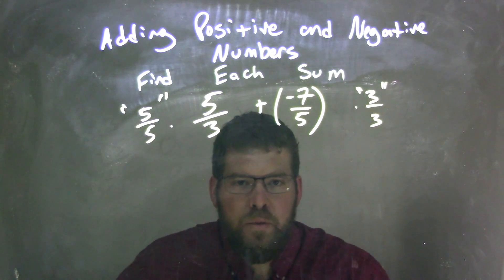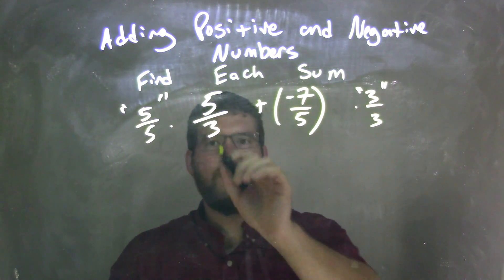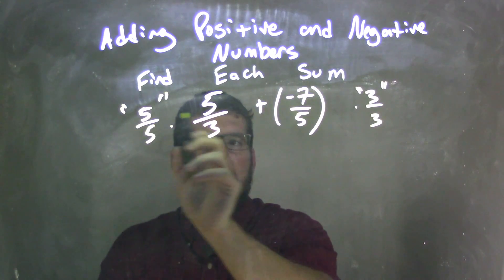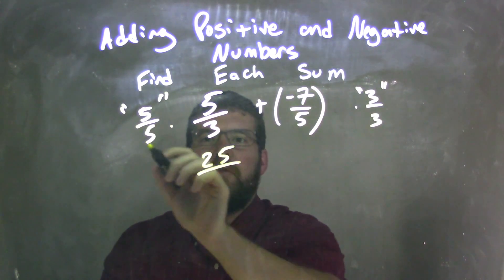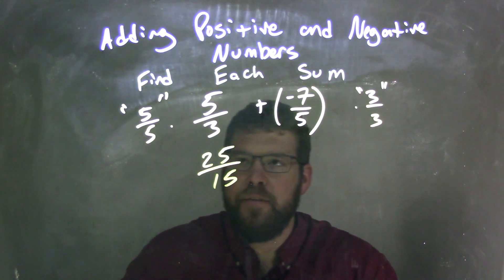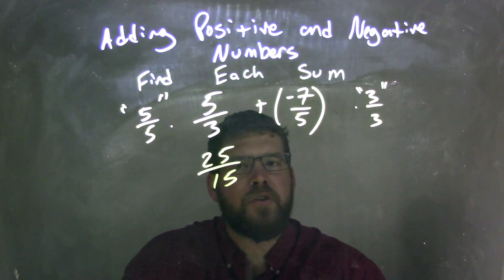This allows me to have a common denominator. So, 5 times 5, we multiply it across the numerator as 25, and 5 times 3 is 15. That tells us that 25 fifteenths is the same fraction as 5 thirds.